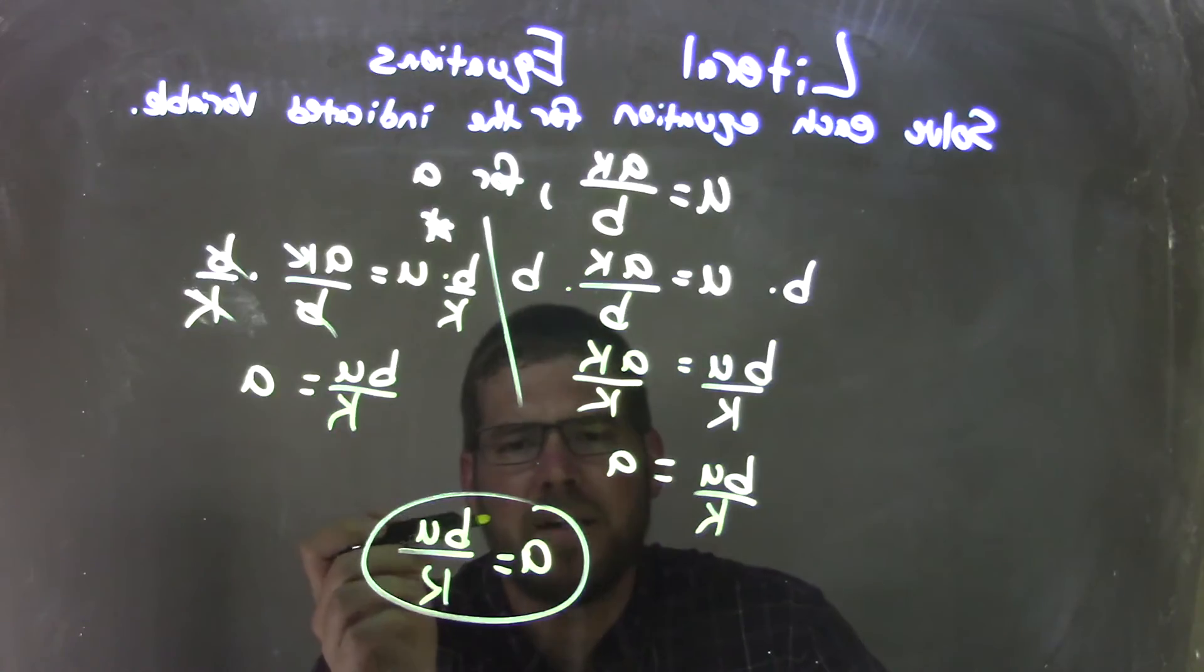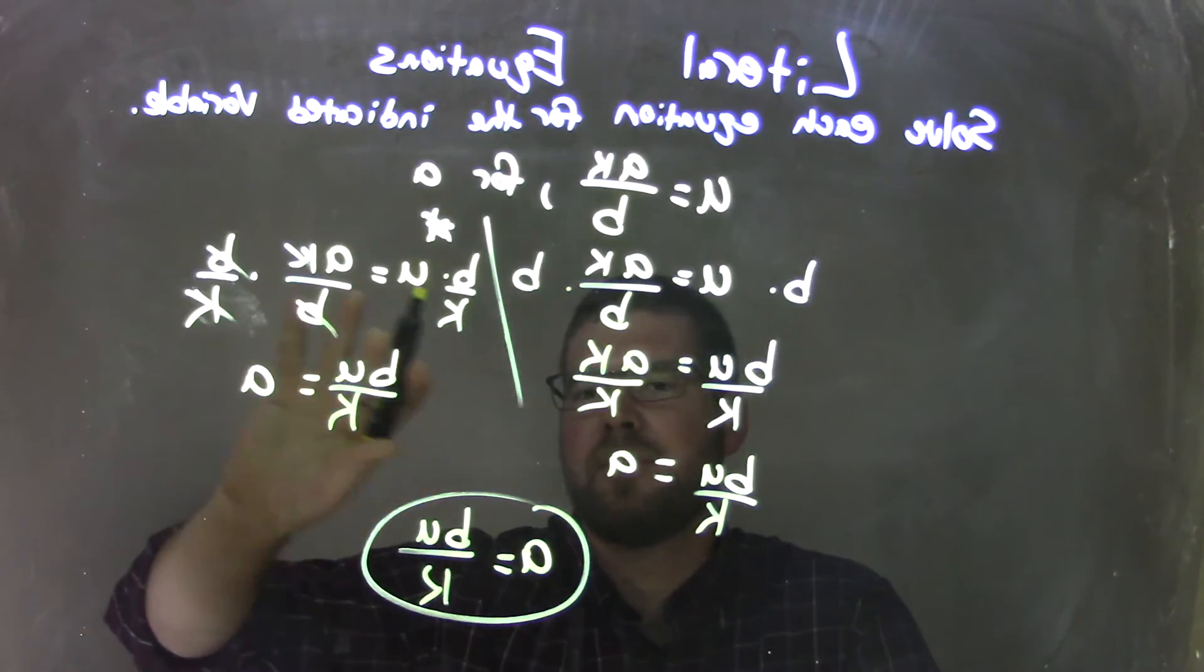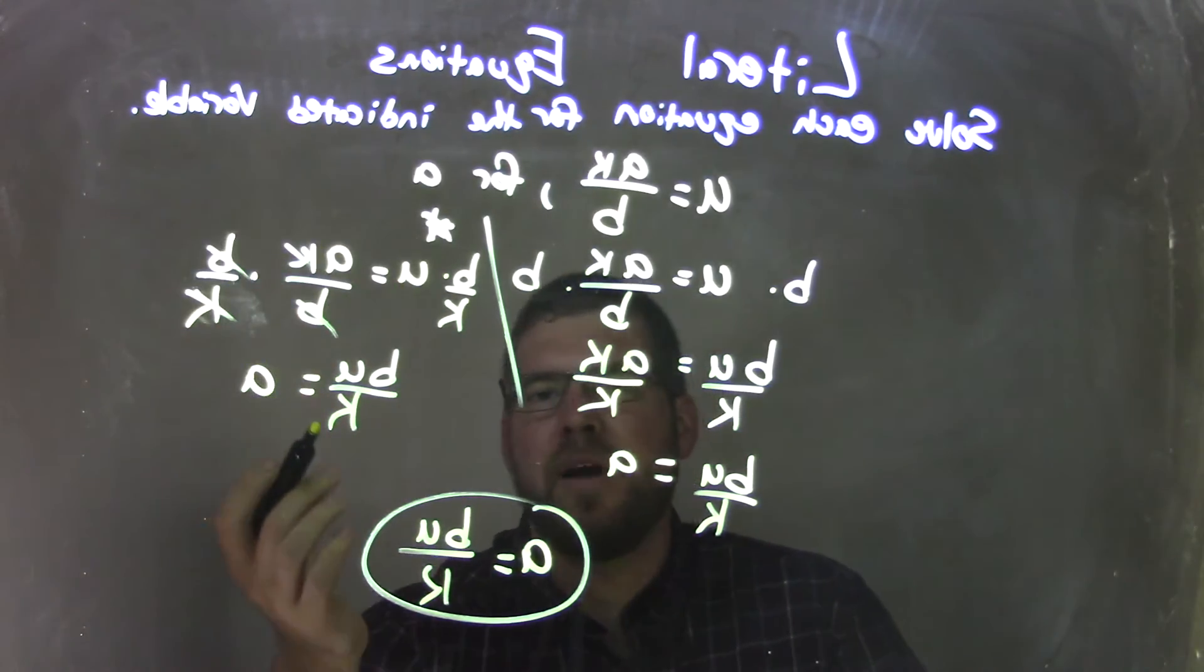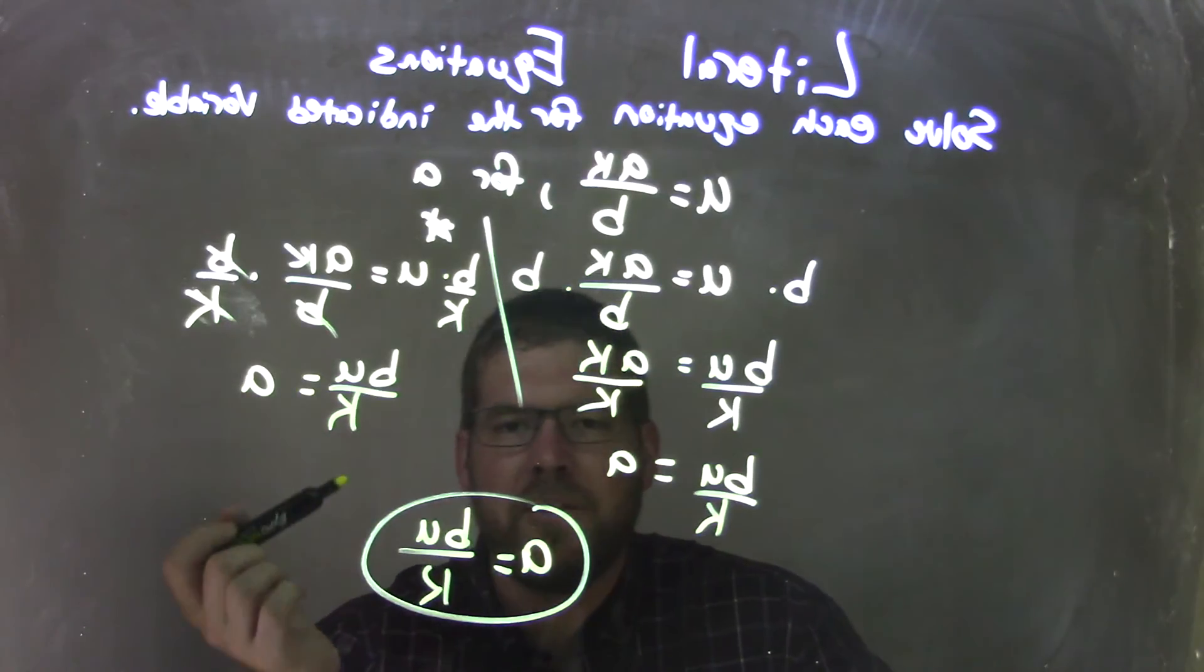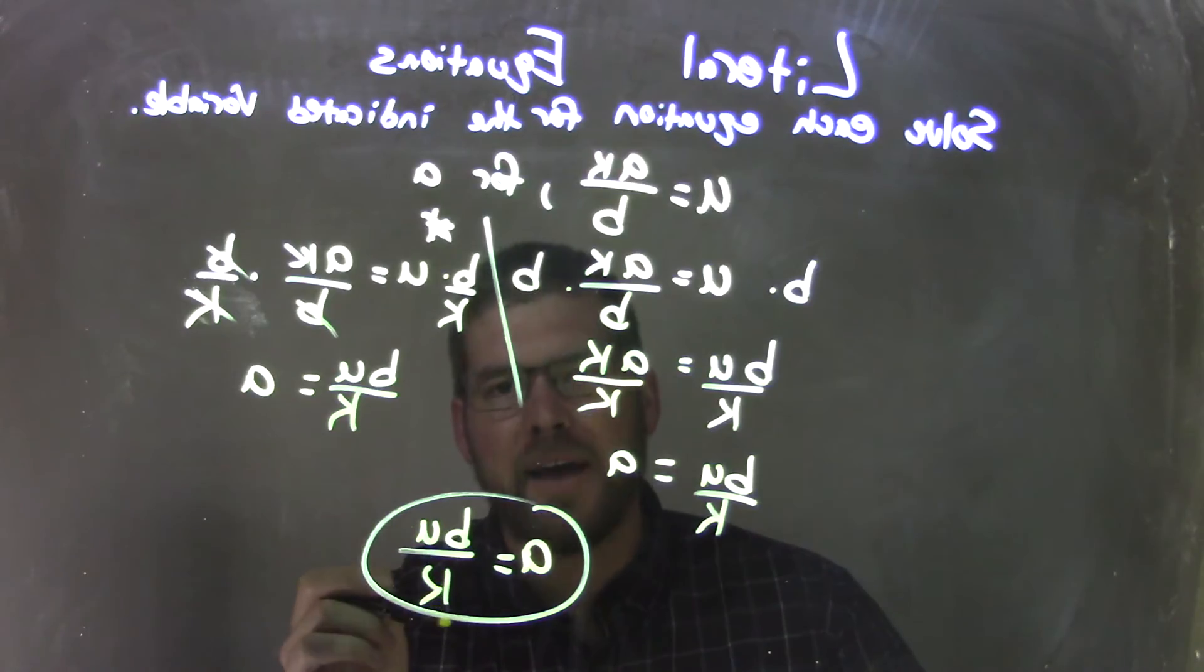And so we're left with the final answer here of A equals BU over K and there was another little method we did just basically doing two steps, the division and multiplication at the same time with just multiplying by a fraction. If you want to do it that way you totally could have. But either way my final answer here is A equals BU over K.